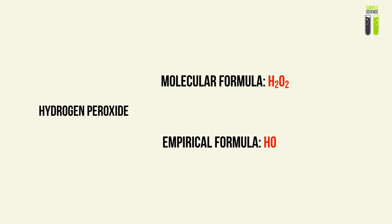Another basic example in which we can see the difference between molecular formula and empirical formula would be hydrogen peroxide. H2O2 is the common symbol we give for hydrogen peroxide in chemistry. So the empirical formula would be the simplified divided version, which will be HO.